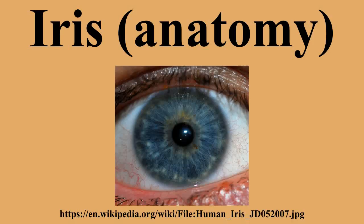The iris is a thin, circular structure in the eye, responsible for controlling the diameter and size of the pupil and thus the amount of light reaching the retina. Eye color is defined by that of the iris.